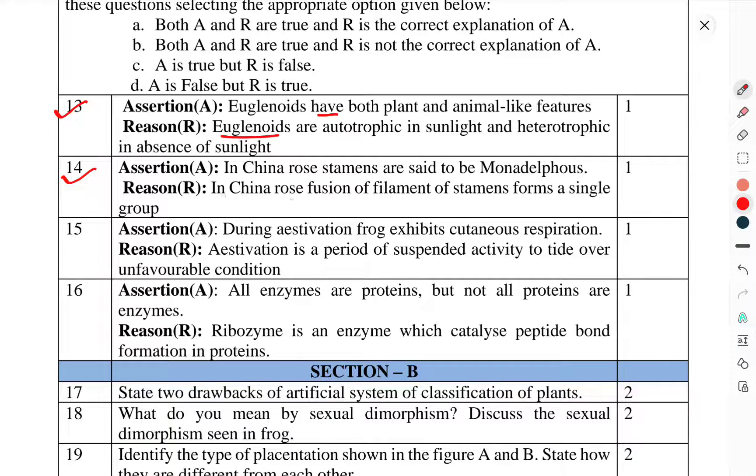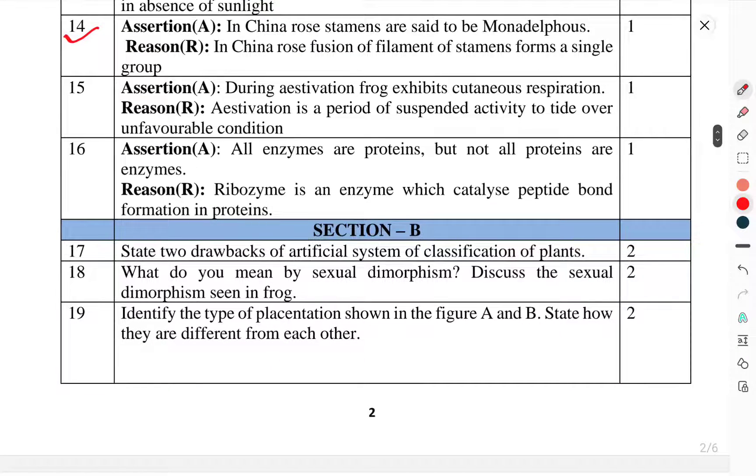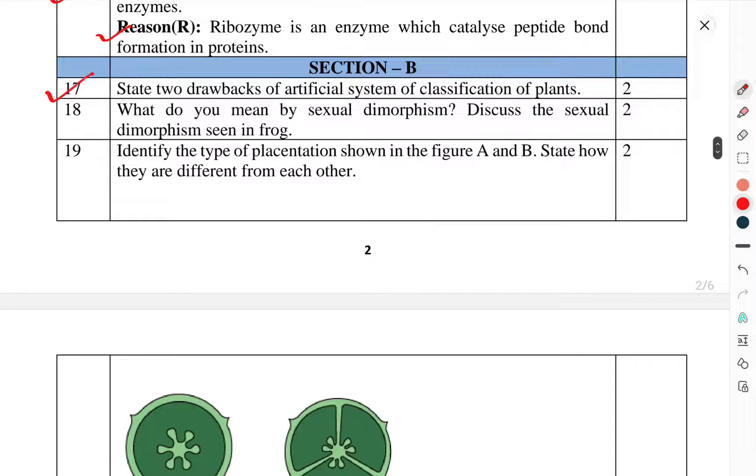Question 16: Assertion - All enzymes are proteins, but not all proteins are enzymes. Reason - Ribozyme is an enzyme which catalyzes peptide bond formation in proteins. Section B: Question 17: State two drawbacks of artificial system of classification of plants. Question 18: What do you mean by sexual dimorphism? Discuss the sexual dimorphism seen in a frog.